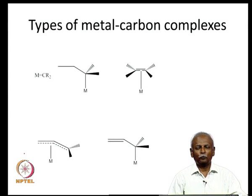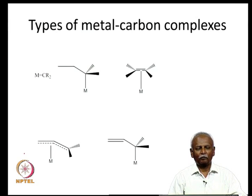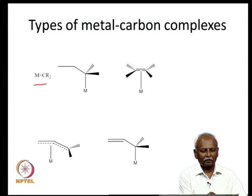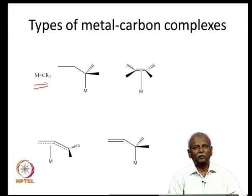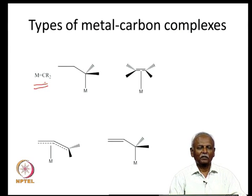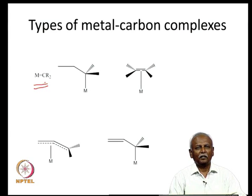Before we plunge into metal allyl complexes, let us get the context. We started by looking at molecules where we had a formal metal-carbon double bond. These are molecules like carbenes and also metal carbonyls, where you do have a metal-carbon double bond which can be written in the valence bond formalism. The important thing is that there is only one carbon attached to the metal.